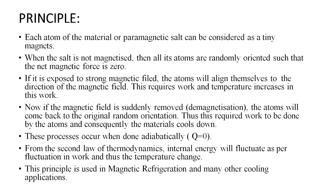Each atom of the paramagnetic salt can be considered as a tiny magnet. When the salt is not magnetized — that is, in the absence of a magnetic field — all its atoms are randomly oriented such that the net magnetic force is zero. If the salt is exposed to a strong magnetic field, the atoms will align themselves in the direction of the magnetic field. This alignment requires some work, and so the temperature increases.